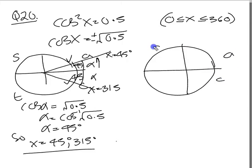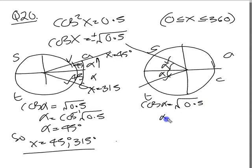CAST, cos is positive here and here, so it's negative there and there. Then we write alpha, we drop the negative and we write cos alpha equals square root 0.5.